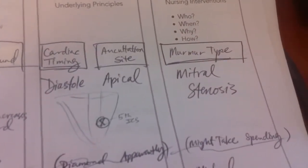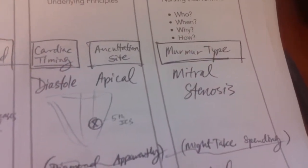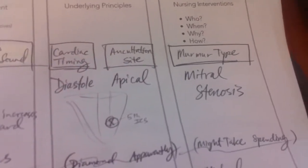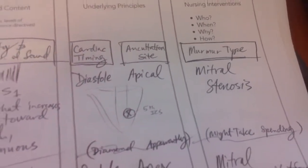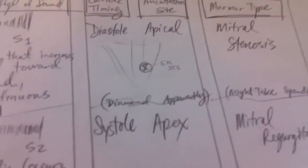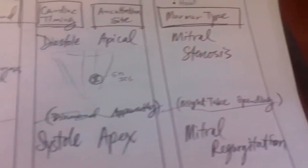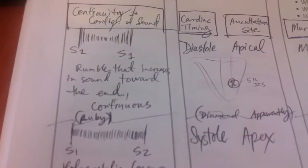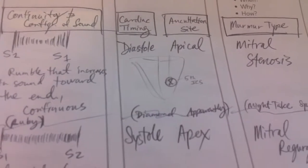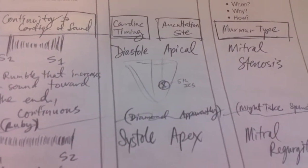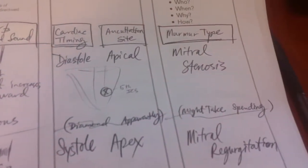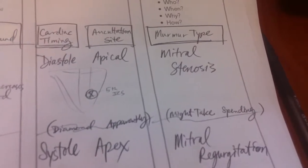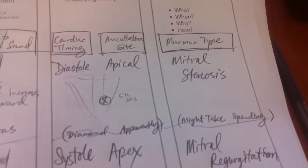Mitral stenosis is a mid-clavicular murmur type. A mnemonic to remember it is 'Ruby Diamonds Apparently Might Take Spending' — Ruby stands for rumble, Diamonds for diastole, Apparently for apical, and Might Take Spending for mitral stenosis.